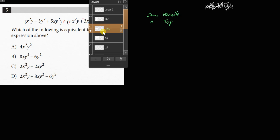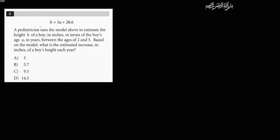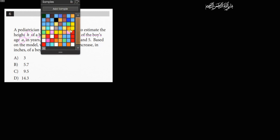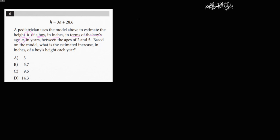Alright, so that's this question. Let's go to the next one, number six. Now a pediatrician, baby doctor, kid's doctor, a pediatrician uses the model above to estimate the height h of a boy in inches. So when kids come to his office, he's going to estimate what their height should be. In inches, in terms of the boy's age A, in years between the ages of 2 and 5. So any kid that comes to his office that's between ages 2 and 5, he's going to try to figure out what his height should be.